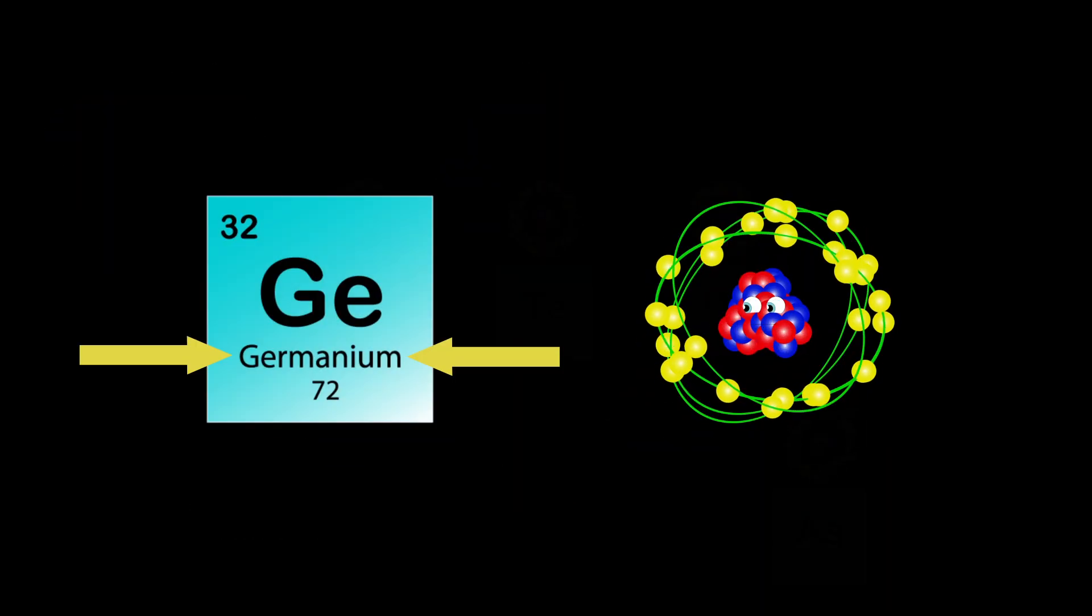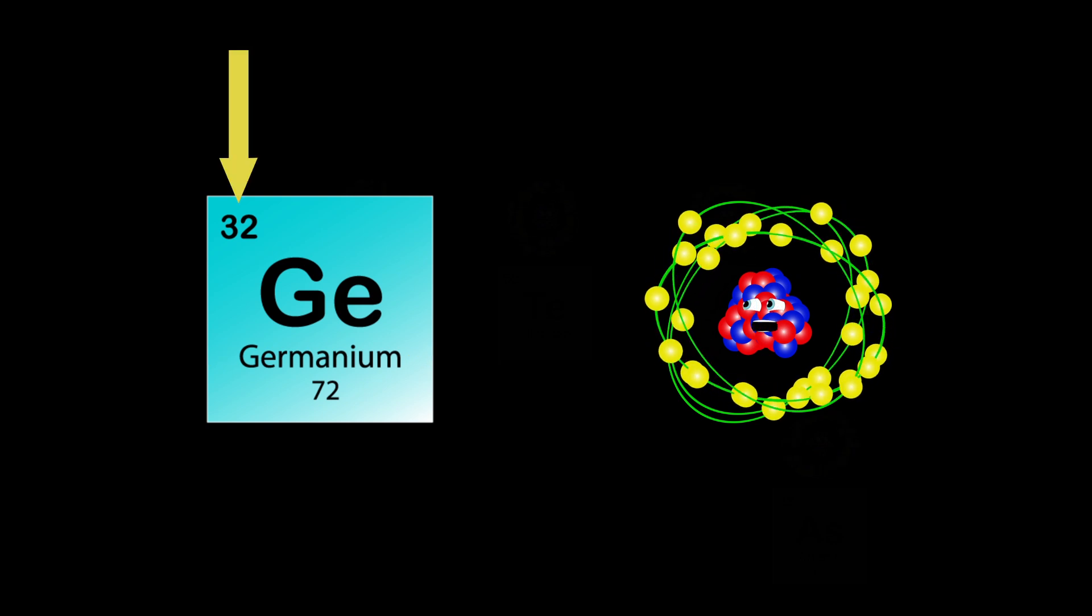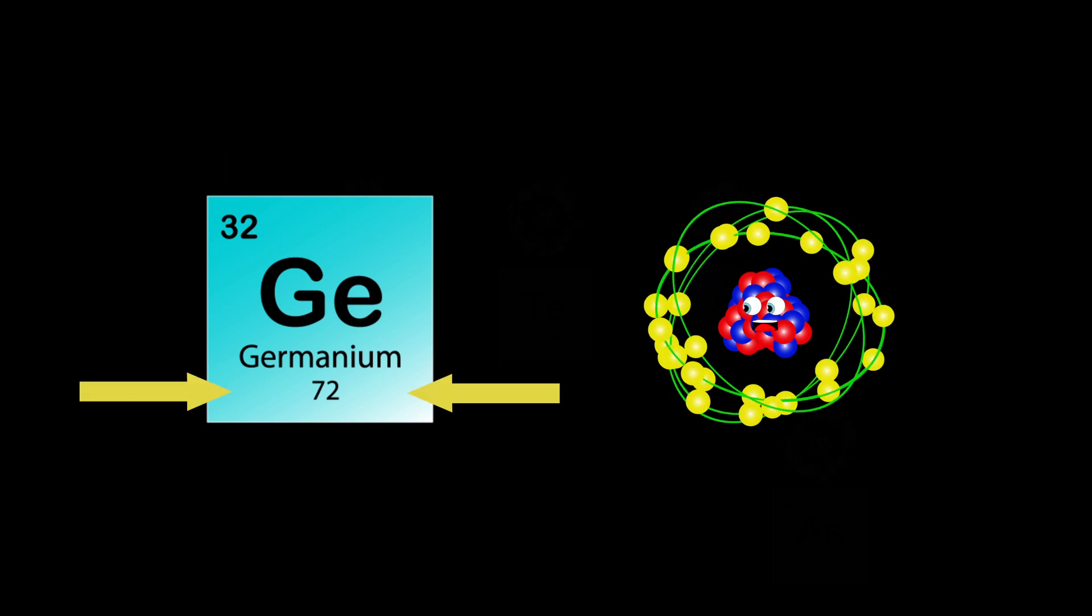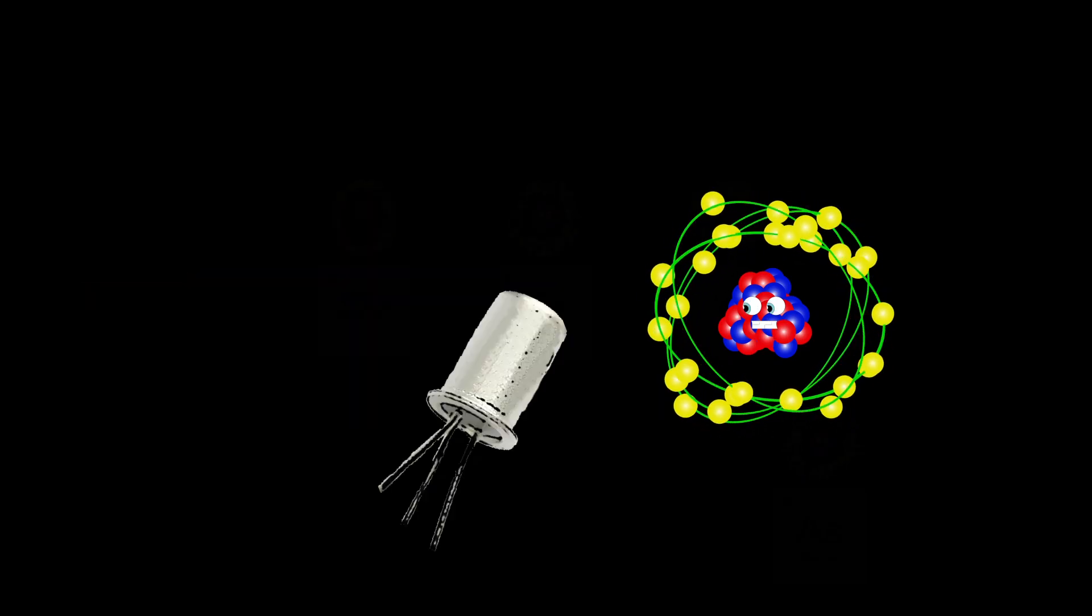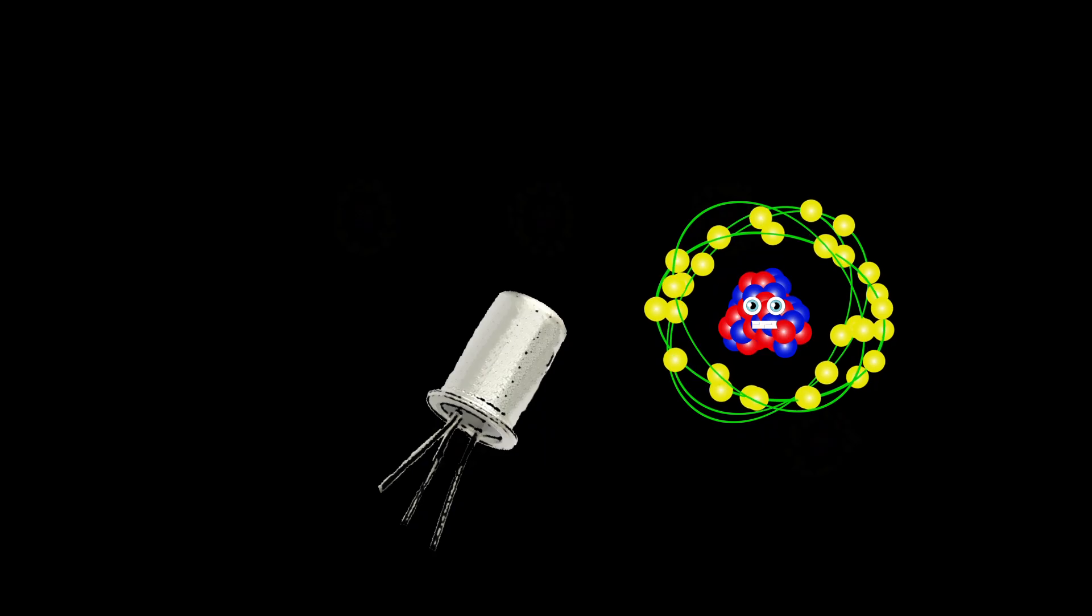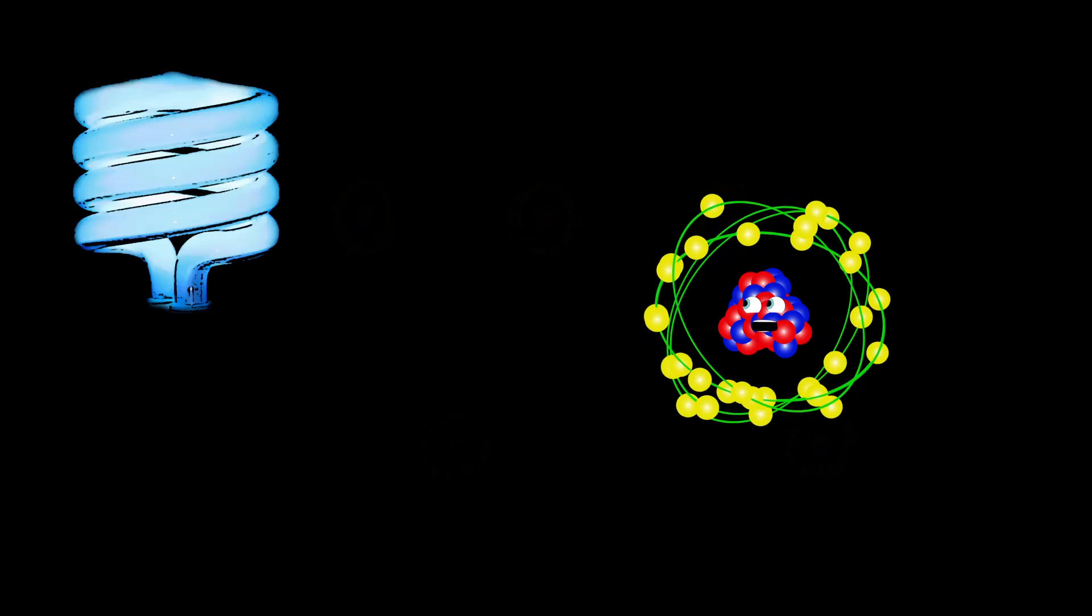I'm Germanium, my atomic number is 32. My atomic mass is 72, Ge is my symbol, it's true. I'm used to make transistors for use in electronic devices. Also used to create alloys and phosphors for fluorescent lamps.